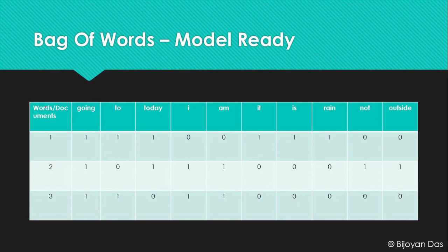When working with huge corpora — say for text classification with 50,000 rows of text — we won't have just 10 frequent words but rather about 2,000 or 3,000. We'll then have a matrix of 40,000 rows and 3,000 columns to analyze. This is how you build the bag of words model. In the next video we will build our own bag of words model in Python from scratch without using any libraries.